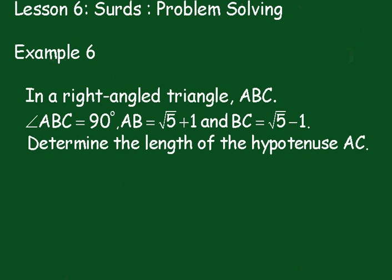Lesson Six: Surds Problem Solving, Example 6. In a right-angled triangle ABC, angle ABC is 90 degrees, AB is equal to root 5 plus 1 units, and BC is root 5 minus 1 units. We have to determine the length of the hypotenuse AC.